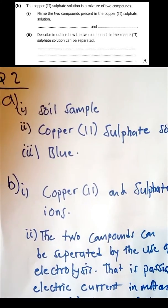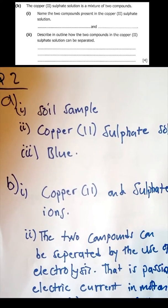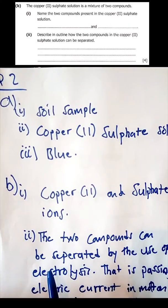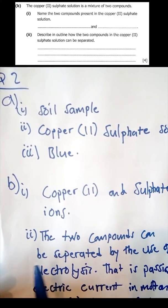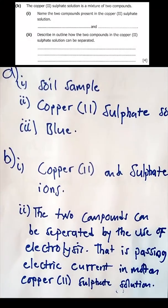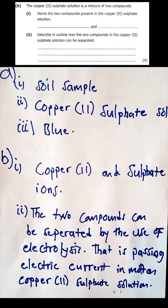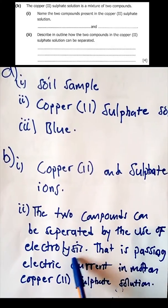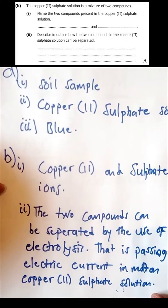Describe in outline how the two compounds in copper sulfate solution can be separated. Copper sulfate solution is a salt that contains positive ions as well as negative ions. They're bonded together by ionic bonding. To separate an ionic compound requires a lot of energy because they're being held together by strong forces. The method that can be used to separate it is electrolysis - that is passing electric current in molten copper sulfate solution. Then the sulfate ions and the copper ions will be separated.